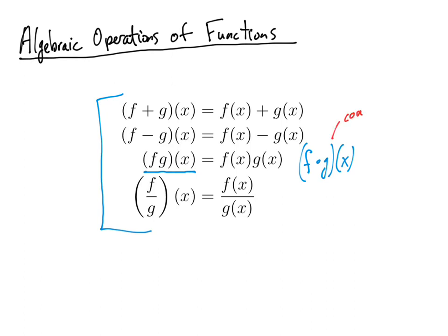This is a composition which is something different. So when we see this, do not multiply the functions together. If we see fg like this with nothing in between, that means we're going to be multiplying the functions. So let's illustrate what's happening here with an example.